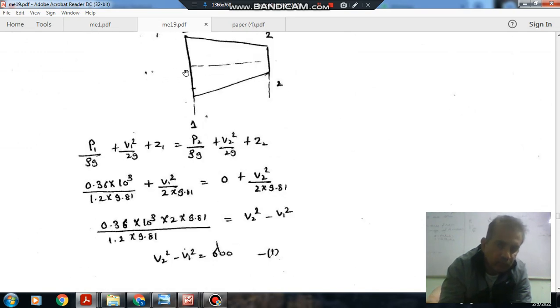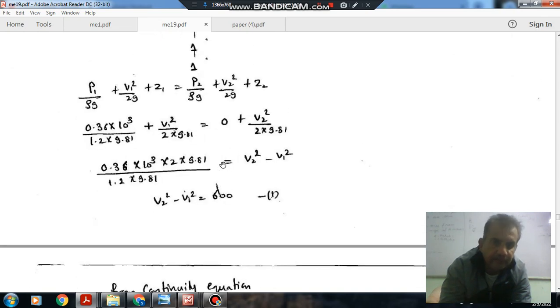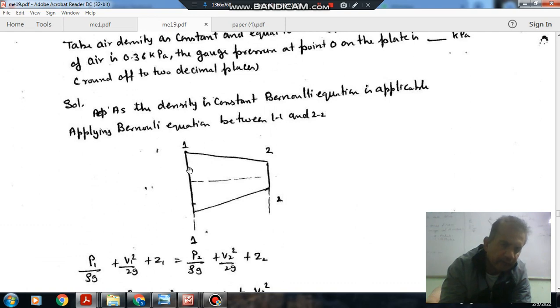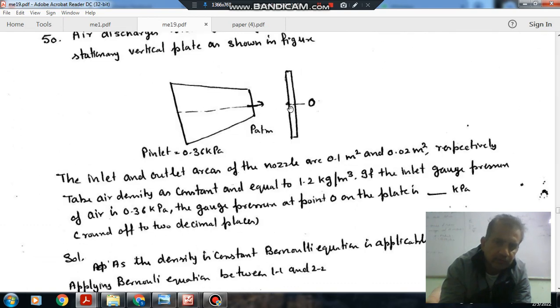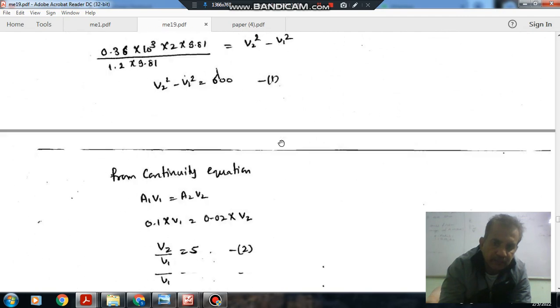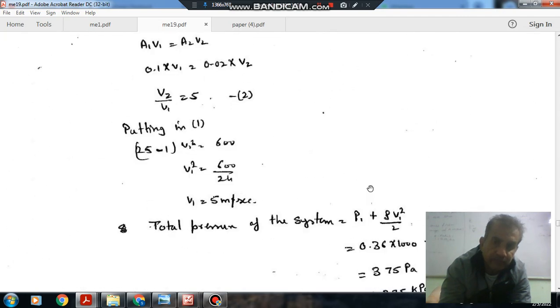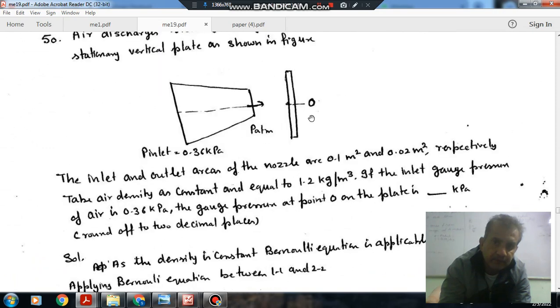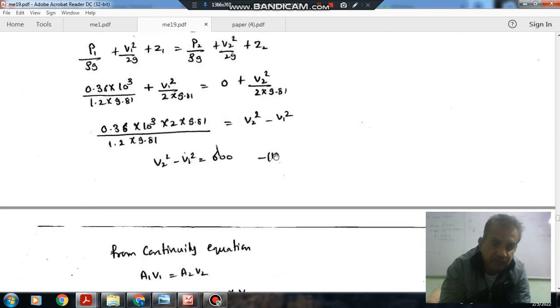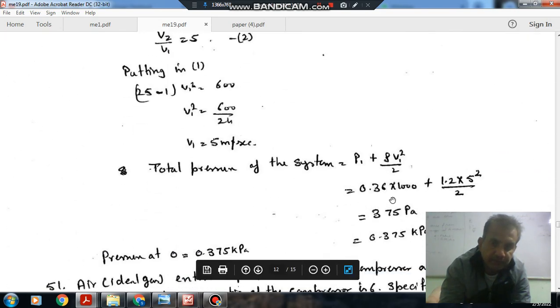Static pressure is 0.36 × 10³ Pascal and dynamic pressure is ρV1² by 2. Because here the velocity is given and pressure is 0, only two types of pressure, static and dynamic pressure, are there. That pressure, that is one kind of energy. So energy will remain constant after this.